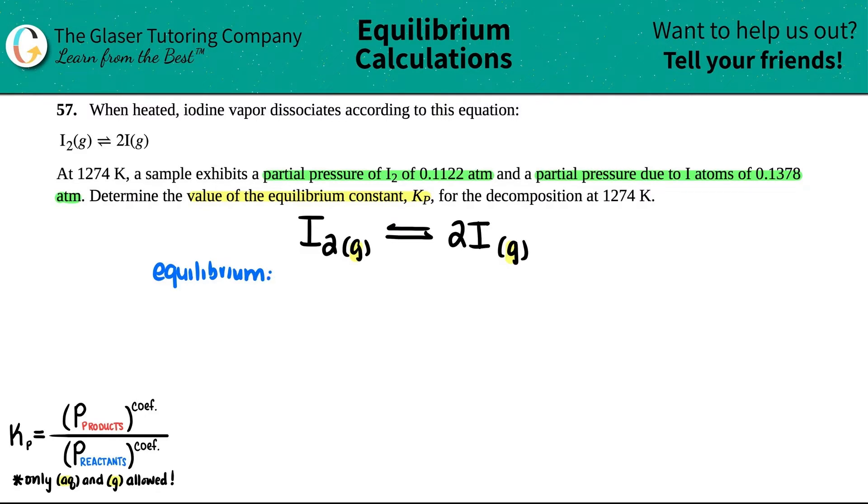At equilibrium, we have a partial pressure of I₂ of 0.1122 atm, so I'm just going to write that down: 0.1122 atm. And for the I we have 0.1378 atm.